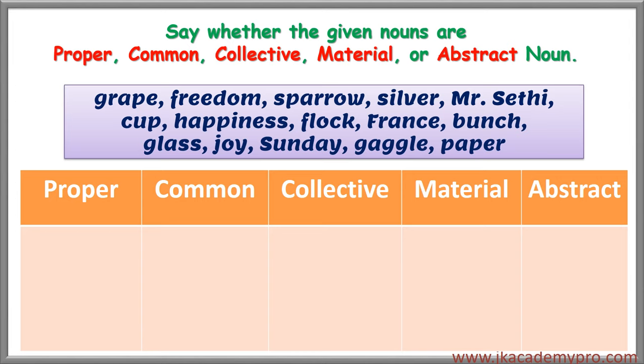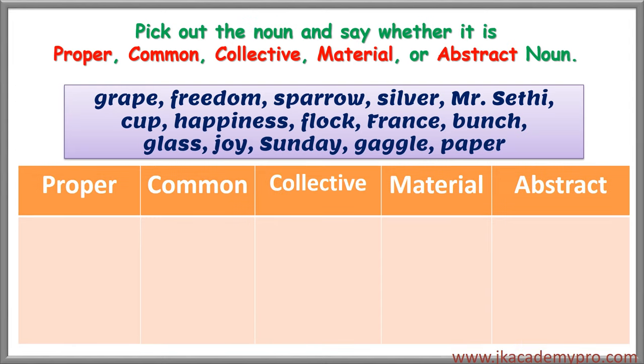I hope you have understood the lesson, children. Now let's solve an exercise. See whether the given nouns are proper, common, collective, material or abstract nouns. Grapes, Freedom, Sparrow, Silver, Mr. Sethi, Cup, Happiness, Flock, France, Bunch, Glass, Joy, Sunday, Gaggle, Paper.